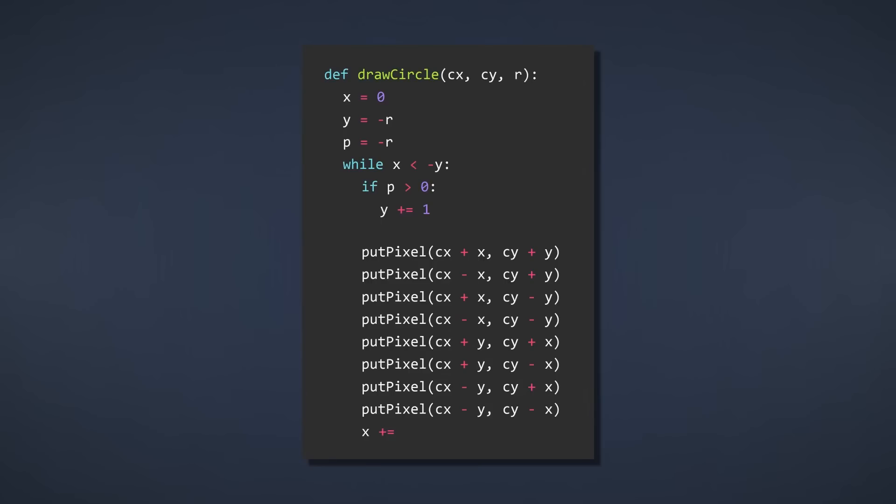The beginning of the function looks the same as before, but then we define p with its initial value of negative r. Then comes our while loop, and at every iteration we now check if p is larger than zero. Remember this just means the midpoint is outside the circle. If so, we increment y by one. Finally, we draw all octant's pixels and increment x at every iteration.